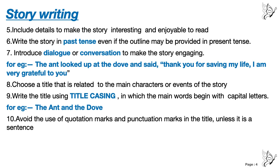Number 8: choose a title that is related to the main characters or events of the story. The outline given is a story related to the ant and the dove — they are the main characters. So you have to choose a title related to the main characters or events. If there are many characters and you are talking about a festival like Holi, you can give a title according to the event also — like 'My Favourite Festival Holi', if there are no main characters.